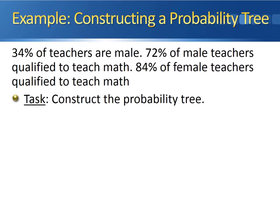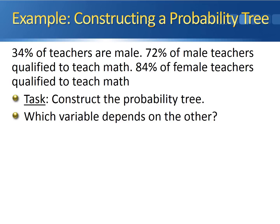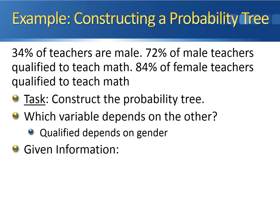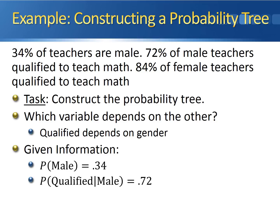Let's take a look at an example of constructing this probability tree. 34% of teachers are male, 72% of male teachers are qualified to teach math, while 84% of female teachers are qualified to teach math. We need to construct the probability tree. The first thing you should do when approaching a probability tree problem is ask which variable depends on the other. In this case, whether or not the person is qualified depends on their gender. So the given information is: the probability of being a male teacher is 0.34, the probability of being qualified given that the teacher is male is 0.72, and the probability of being qualified given that the person is female is 0.84.